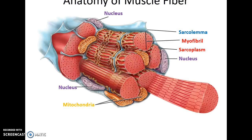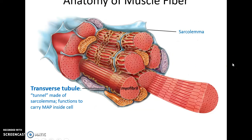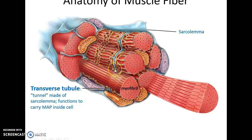Here is another view showing the sarcolemma, the myofibrils, lots and lots of mitochondria in skeletal muscle fibers, and of course multiple nuclei. Some of the sarcolemma forms a tunnel or invagination into the body of the muscle fiber — this structure is called a transverse tubule, and these transverse tubules go around the myofibrils.